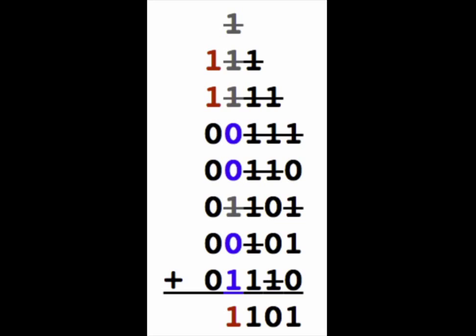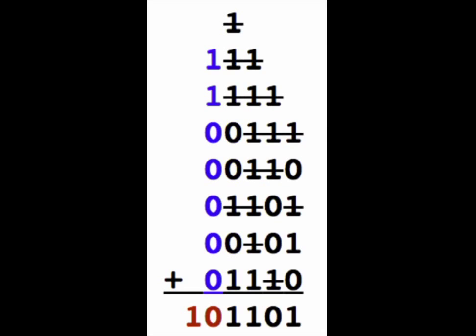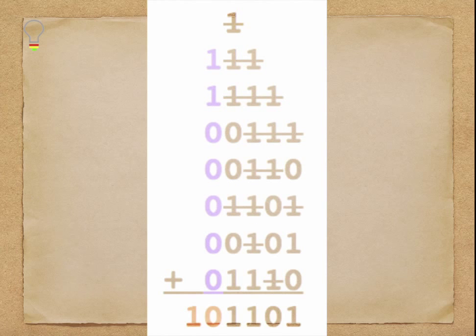Finally, adding the 2 carries in the last column gives us 1 0, so we write this below the column, and we have our answer of 1 0 1 1 0 1.